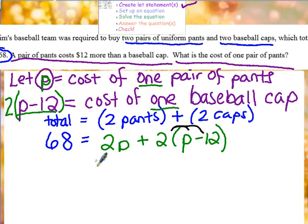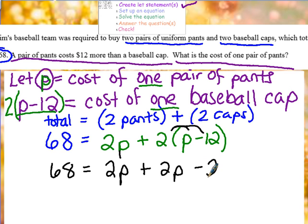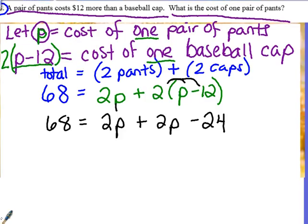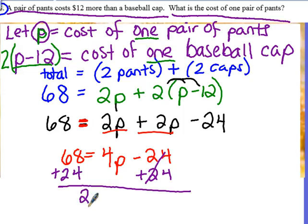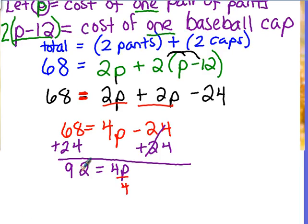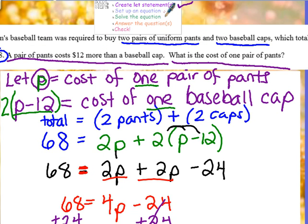I'm going to distribute the two, and we will get 68 equals 2p plus 2p minus 24. Notice that I have p's on the same side of my equal sign, so I will combine the two of these: 4p minus 24 equals 68, and continue solving. Add 24 to both sides. 92 is equal to 4p. And lastly, divide by 4, and we get that p is equal to 23. Don't stop here. Remember your steps from the front page: after you set up your equation, and you solve it, you must answer the question.